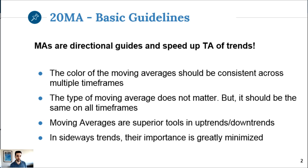The color of the moving averages should be consistent across multiple timeframes - you don't want a blue 20MA on the daily and a black 20MA on the five minute. Whatever color you pick, make sure it's consistent on all timeframes. The type of moving average - exponential, simple, weighted - does not matter that much, but it should also be the same on all timeframes.